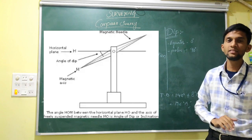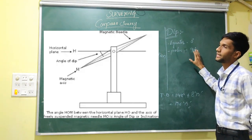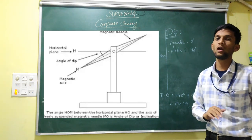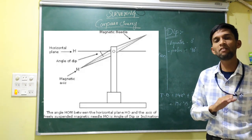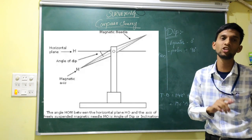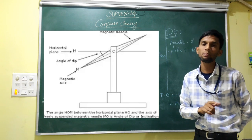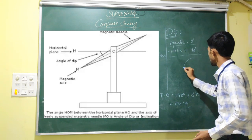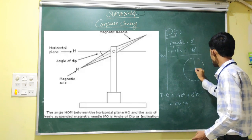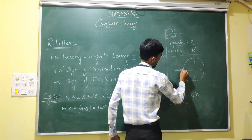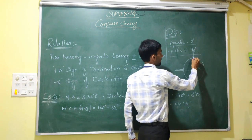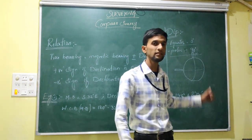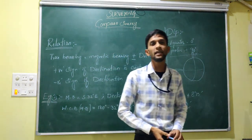What is dip? Declination is a horizontal angle, while dip is a vertical angle made by the magnetic needle with respect to a horizontal plane or horizontal magnetic flux. It is called dip. The vertical angle made by the needle with respect to a horizontal plane is called dip — it ranges from 0 degrees when completely horizontal to 90 degrees vertical.